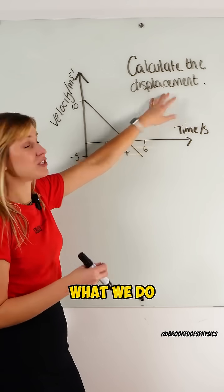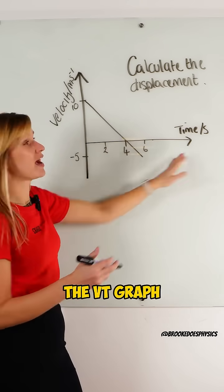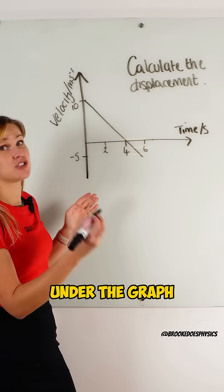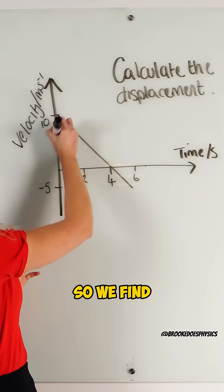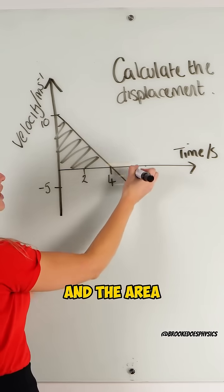To calculate displacement, what we do is find the area underneath the VT graph. So what I'm going to do is find the area under the graph and the axis. So they find the area of this shape and the area of this shape.